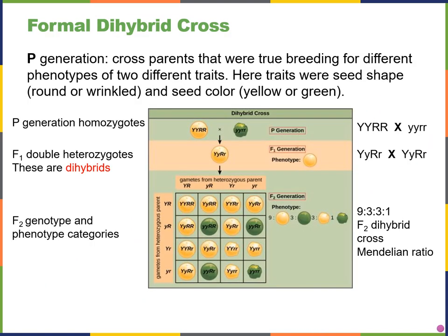So far we've been looking at single characteristics with two different versions, such as widow's peak or seed color. Now we're going to look at two characteristics at the same time, where each characteristic has two versions. One example is the dihybrid cross. We always start with true breeding parents — always homozygous for their trait. Here we have two true breeding parents: the one on the left is a yellow round seed, homozygous dominant for both characteristics; the one on the right is a green wrinkled seed, true breeding for both characteristics.